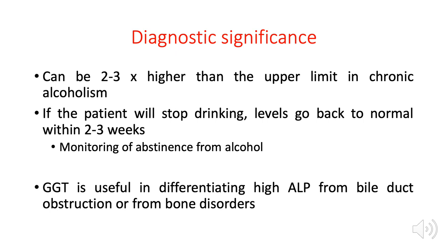Another enzyme used to diagnose bile duct obstruction is ALP. The problem with ALP is that it has many tissue sources — liver, particularly the bile duct, bone, and placenta. A high ALP does not exclusively mean bile duct obstruction; it could also indicate bone disease. To confirm whether high ALP is due to bile duct obstruction, you also need to request GGT. If both are elevated, that suggests bile duct obstruction. If ALP is elevated but GGT is normal, you should look for another cause of the elevated ALP.